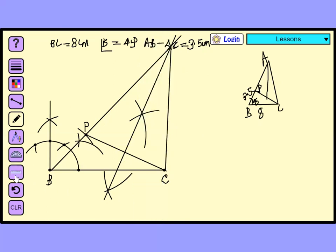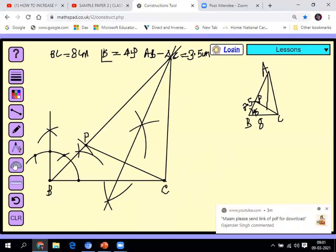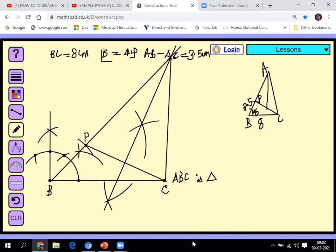So, ABC is the required triangle, ABC is the required triangle. So, I hope you have understood, you can draw. So, ABC is the required triangle.